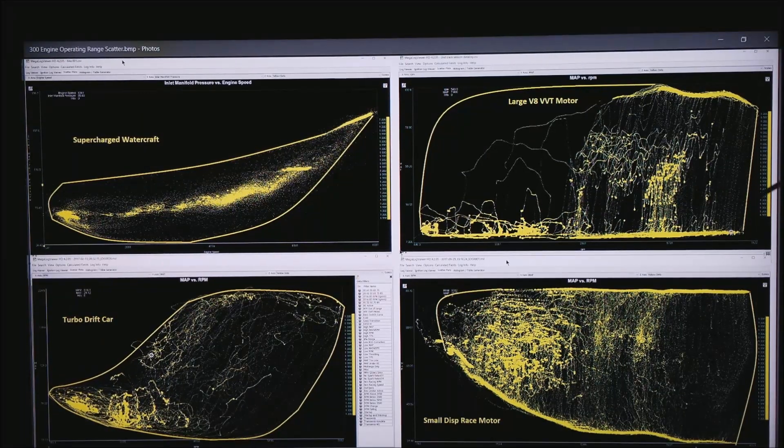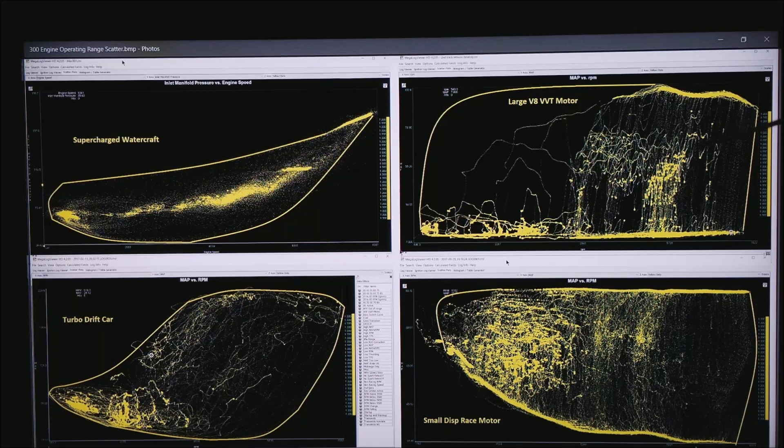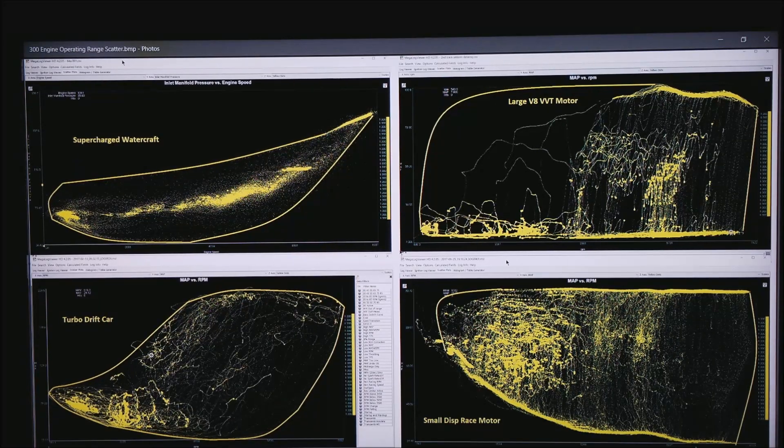The data on the right is when he's out on course and you can see in the middle where he throttle steers his car where he's backing in and out of the power.